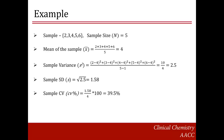Here is an example of how to compute these estimates. We have a sample size of 5. The mean of the sample is the average of all the points in the sample. In this example, the mean of the sample is 4. The sample variance is the sum of the squared deviations of each data point in the sample from its mean, divided by the sample size minus 1. The sample variance is 2.5. The sample standard deviation is the square root of the variance and is equal to 1.58. The sample CV in percent is the sample standard deviation divided by the sample mean times 100, which is equal to 39.5%.